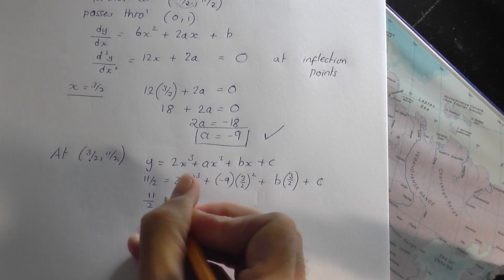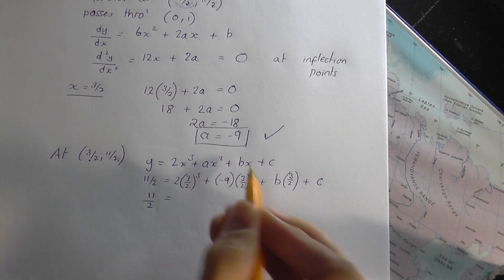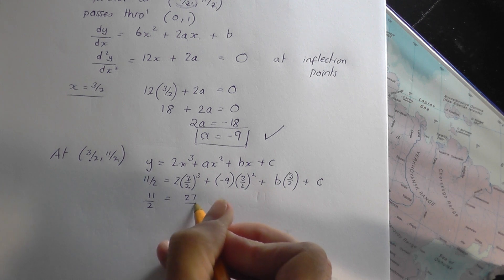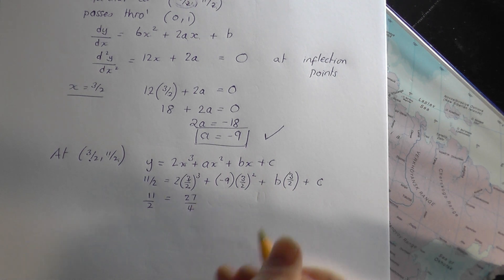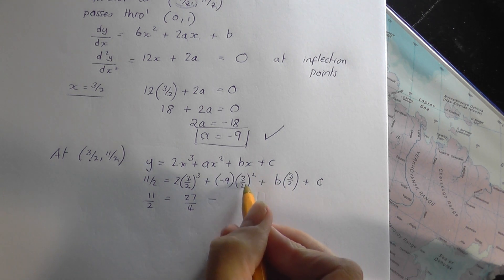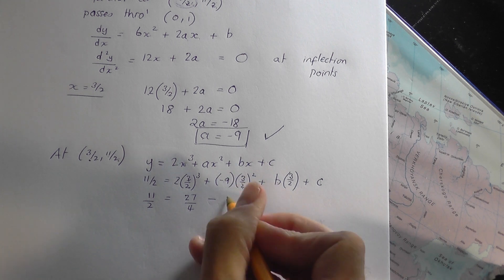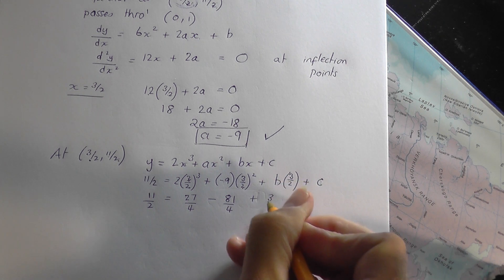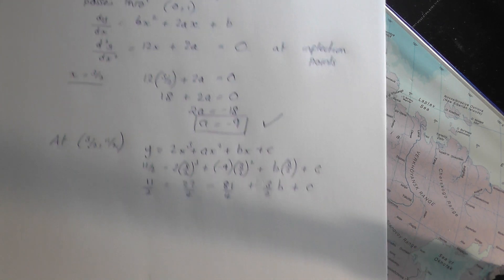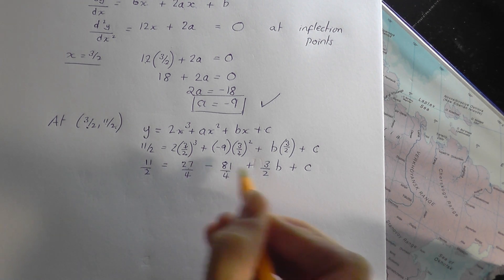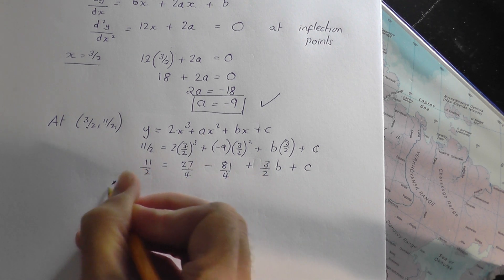On the left, 11 over 2 equals, if you cube 3 over 2, you're going to get 27 over 8. The 8 on the bottom cancels with the 2 there to give 27 over 4. Plus times a minus, and that will be a plus. Multiply together to give a minus. This gives 9 over 4. 9 times 9 over 4 is 81 over 4. Plus 3 over 2b, plus c. I don't like all of these fractions, so what I'm going to do is get rid of the fractions by timesing everything through by 4.